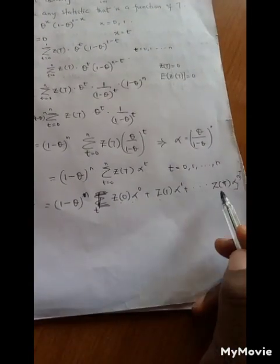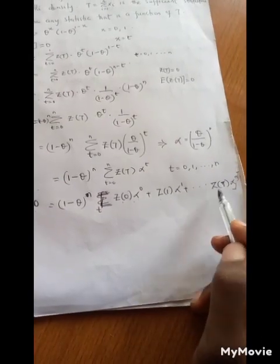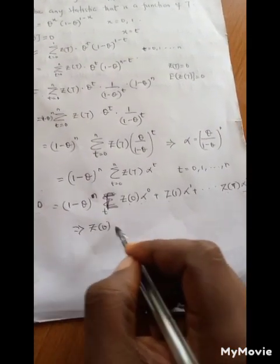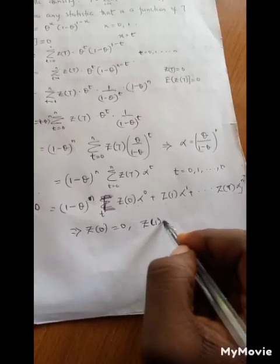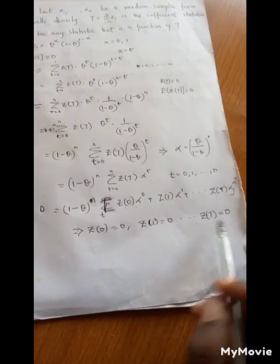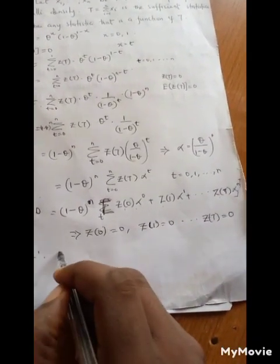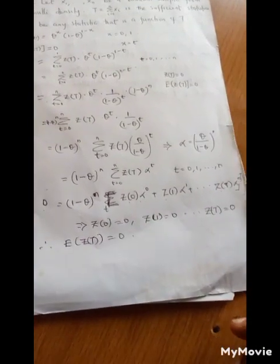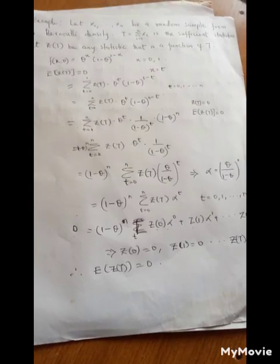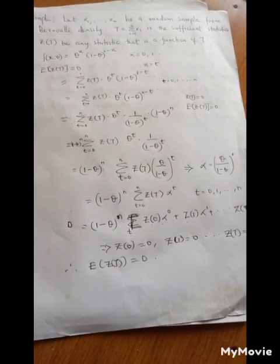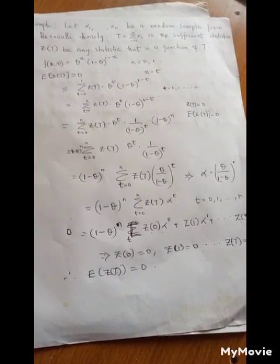The only possible way for this expression to equal zero is if z(0), z(1), and z(t) are all equal to zero. Having shown this, therefore the expectation of z(T) is also equal to zero. We can now say that the Bernoulli distribution comes from a family of densities that is complete, and therefore the sufficient statistic T, which equals the sum of xi, is also complete.